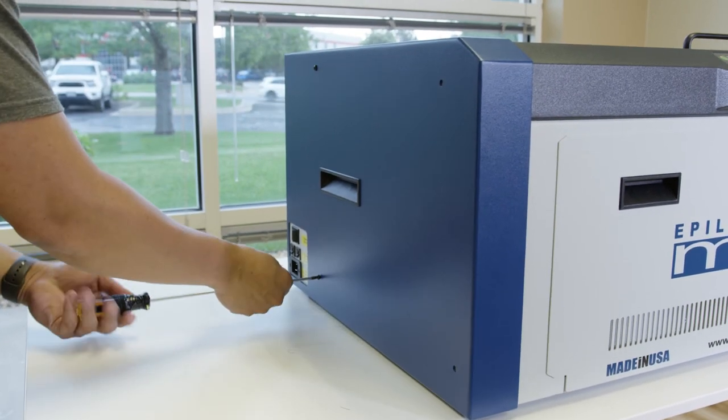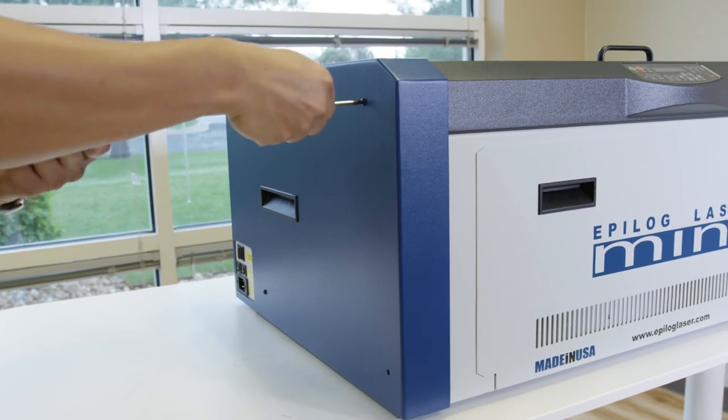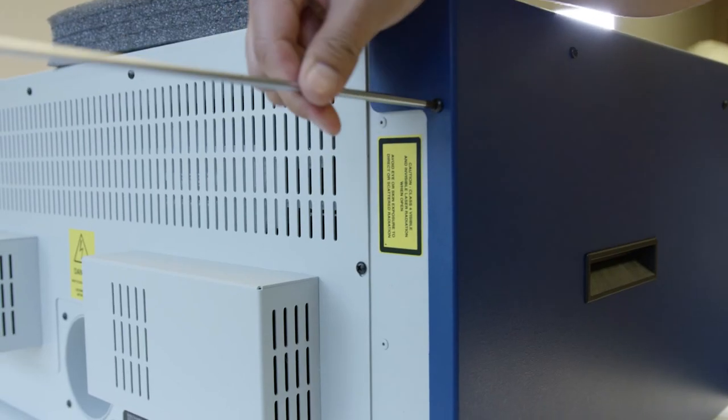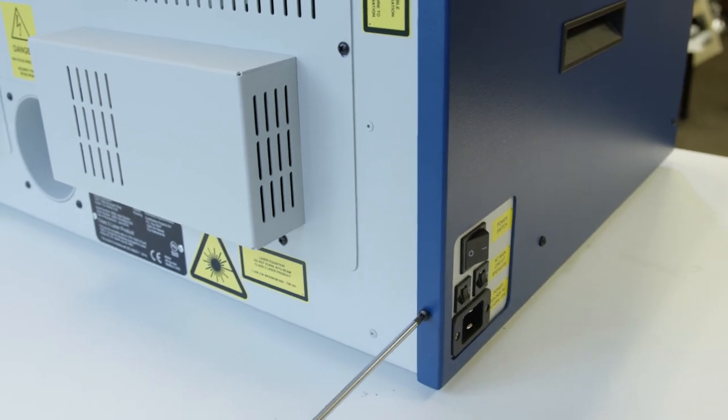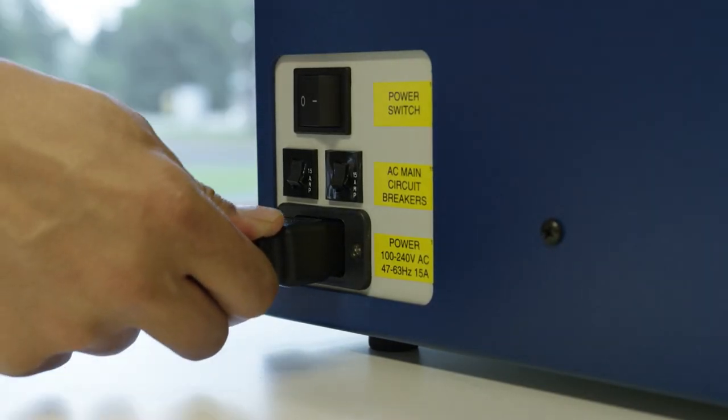Reinstall the left side panel by reattaching the four screws on the side of the machine and two screws on the back of the machine. Then plug the machine in and turn it on.